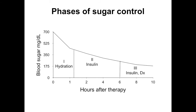In terms of sugar control, there are phases: initially, fluids alone reduce sugar by around 200 mg/dL through dilution and by reducing counter-regulatory hormones. After 1-2 hours, insulin is started, causing gradual further reduction. Eventually insulin will bring sugars below a critical level while acidosis has not yet resolved — at this point, dextrose must be added alongside continuing insulin.